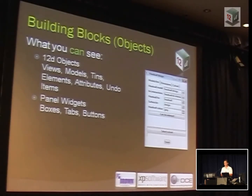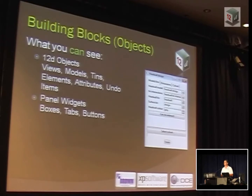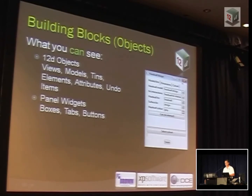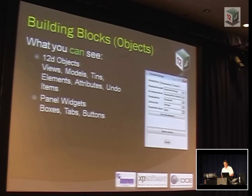So, building blocks — how can we put these things together? Well, first of all, it's made up of objects. These objects are things you're used to seeing inside 12D: things like views, models, tins, elements. All these things are objects when it comes time to program. If you get so gung-ho as to want to put a panel together, a panel is put together with things like tabs — these things are all called widgets. We've got button widgets, box widgets, and more widgets than you can possibly imagine — but that's probably not where I'm going to encourage you to start.